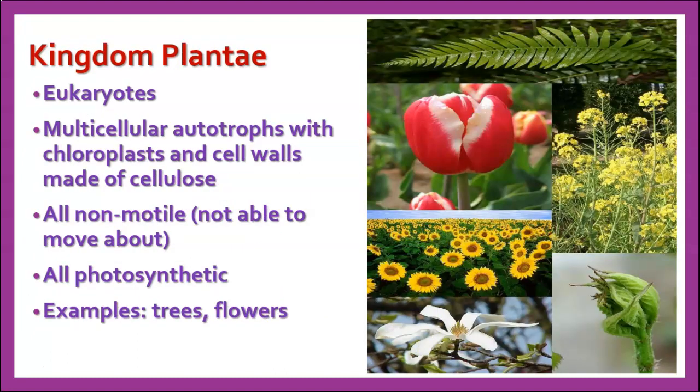Kingdom Plantae are also eukaryotes — multicellular autotrophs with chloroplasts and cell walls made of cellulose. All members of this kingdom are non-motile, meaning they can't get up and move from one place to another, though they can still move. All members of this kingdom are photosynthetic. Examples are trees, flowers, grass, weeds — all things you normally think of as plants belong to Kingdom Plantae.